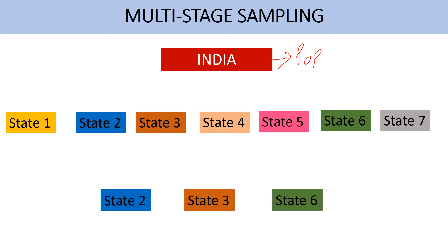So State 1, State 2, State 3 — this way I have mentioned different clusters. Now by using simple random sampling I will select few states among these clusters. Let's say three clusters I have selected.